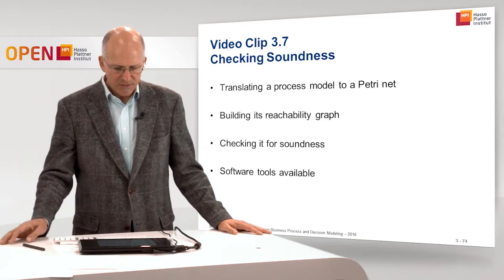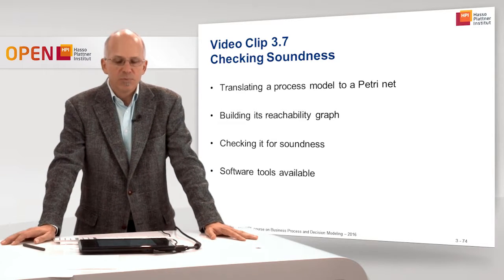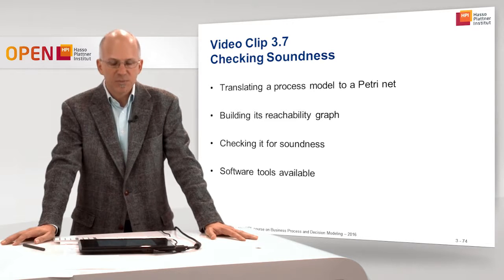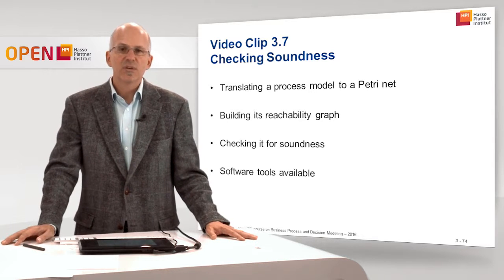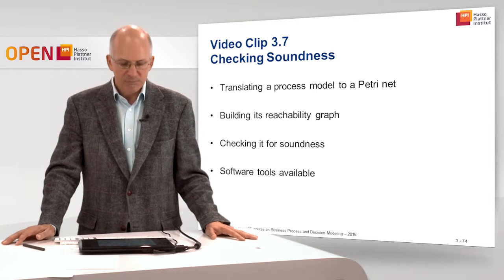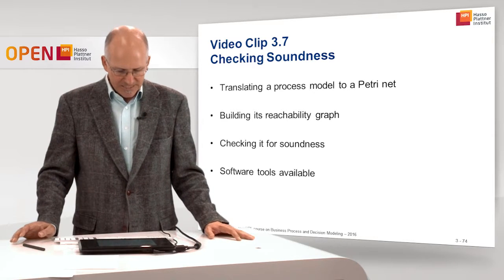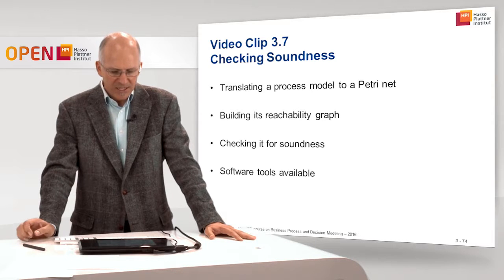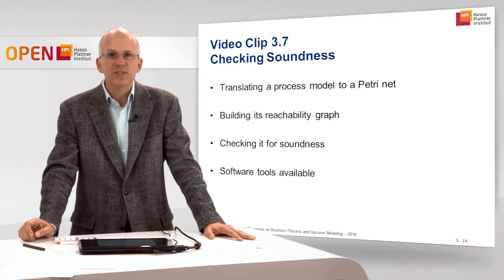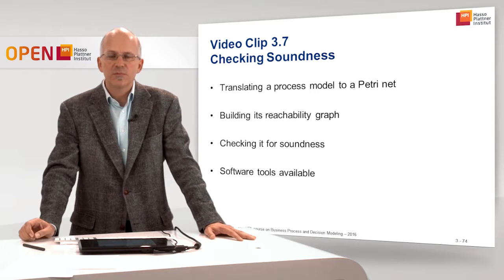This concludes video clip 3.7 in which we checked soundness. We used the translation of a BPMN process model to a Petri Net, built its reachability graph, and used this graph to check the Petri Net for soundness. We could check for all three properties. If all properties are met, the Petri Net is sound and the BPMN process model is sound. If one property is violated, then the Petri Net is not sound and the BPMN process model is also not sound. Finally, I gave a reference to servicetechnology.org where you find software tools to analyze processes from a behavioral side.